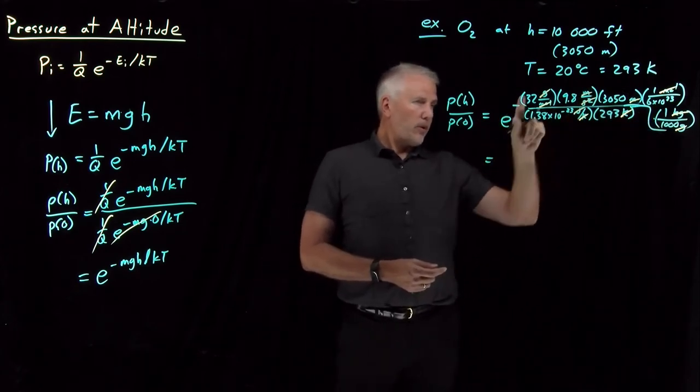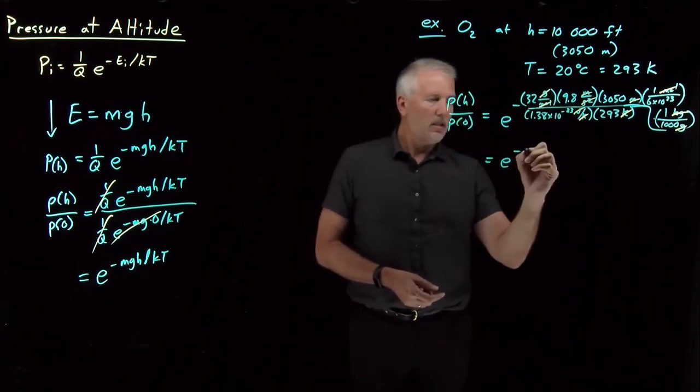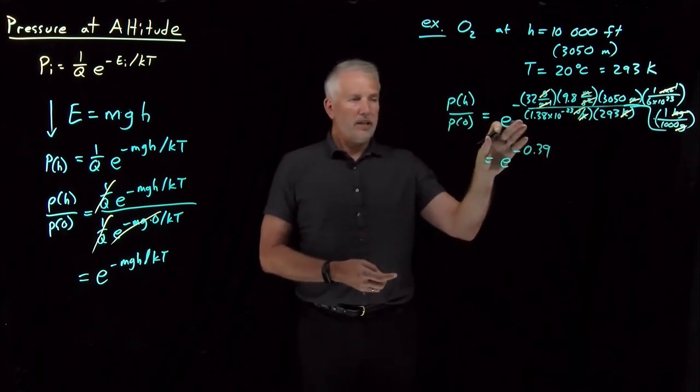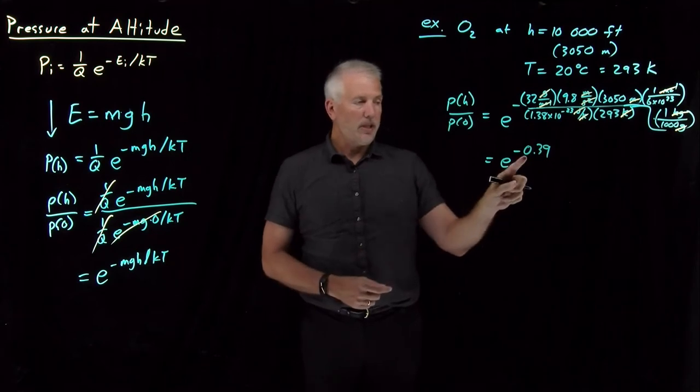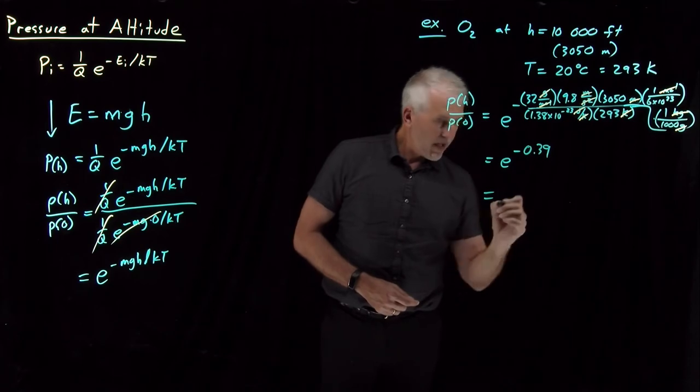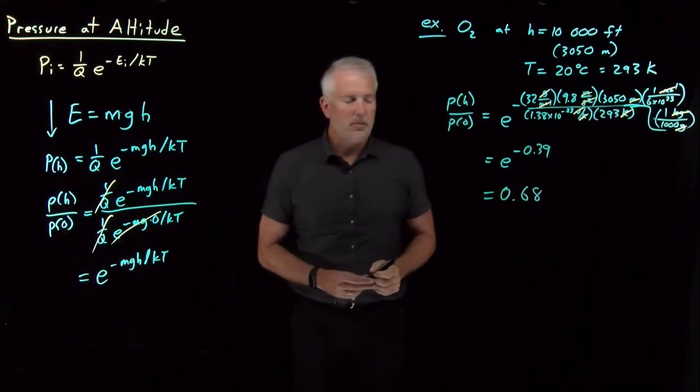If I do the arithmetic up in the exponent, that works out to be 0.39. So this probability, e to the minus mgh over kT, works out to be e to the minus 0.39. If I do one more step of the math, e to the minus 0.39 works out to be 0.68.